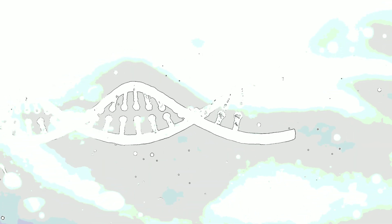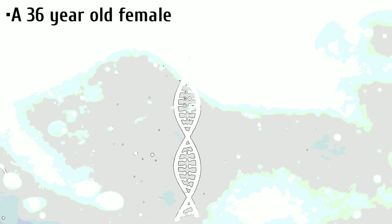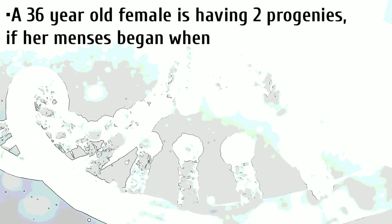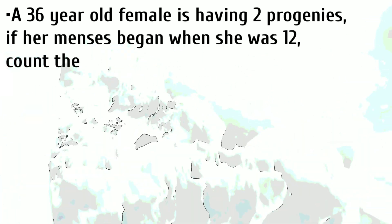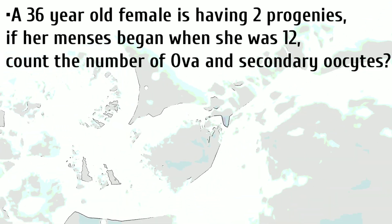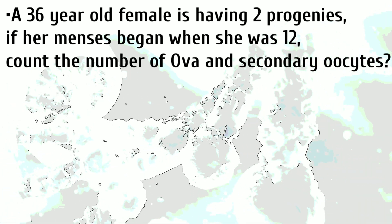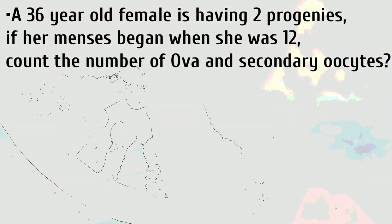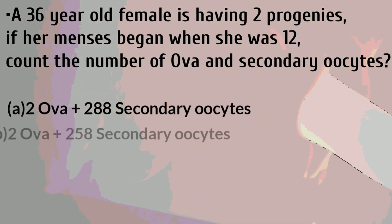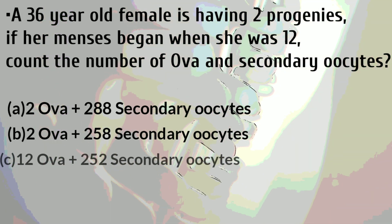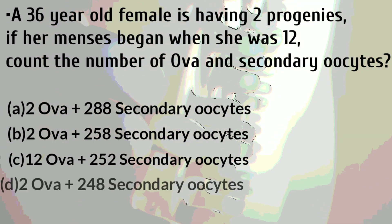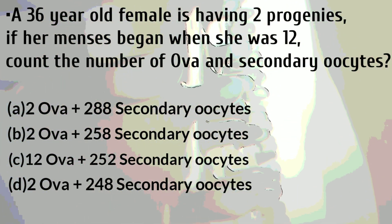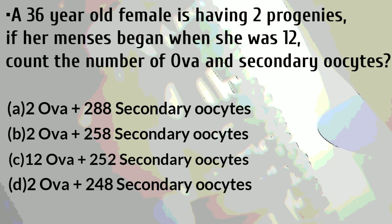Welcome to this super amazing MCQ — this is definitely going to help you a lot and will clear many of your concepts. The question: a 36-year-old female has two children. If menses started at age 12, calculate the number of secondary oocytes and ova till present. The options are listed below.